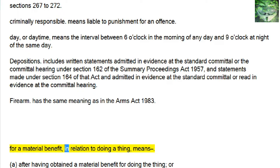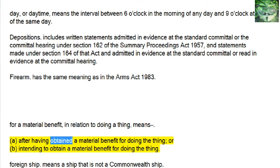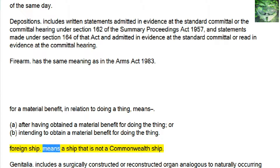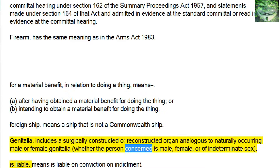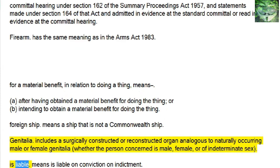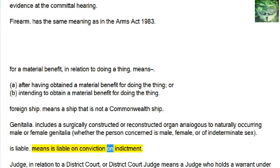For a Material Benefit — in relation to doing a thing — means: a, after having obtained a material benefit for doing the thing; or b, intending to obtain a material benefit for doing the thing. Foreign Ship means a ship that is not a Commonwealth ship. Genitalia includes a surgically constructed or reconstructed organ analogous to naturally occurring male or female genitalia, whether the person concerned is male, female, or of indeterminate sex. Is Liable means is liable on conviction on indictment.